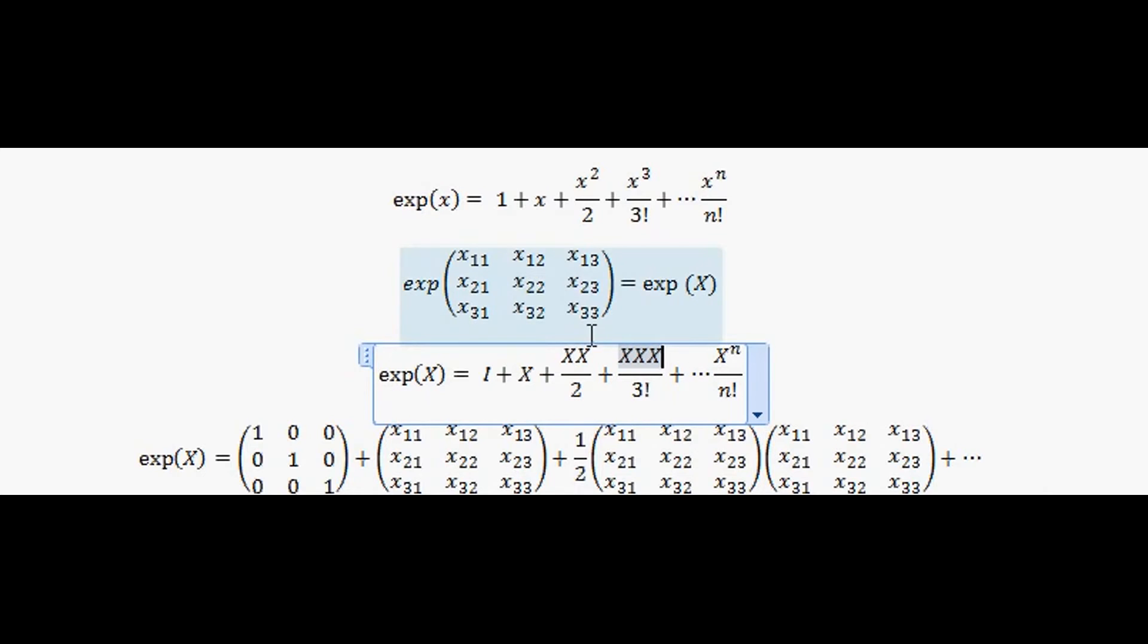What I mean by that is that instead of x squared, I'm multiplying the matrix by itself using matrix multiplication. And in this way x cubed would be the same as multiplying X by itself and then by itself again in a matrix multiplication way.